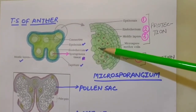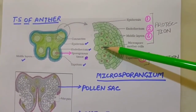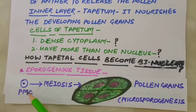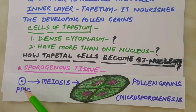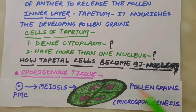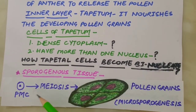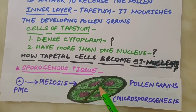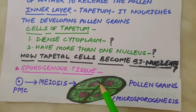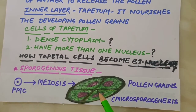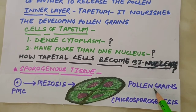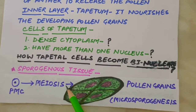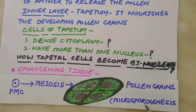In the center are cells called sporogenous tissue. Each cell of the sporogenous tissue is capable of giving rise to a microspore tetrad. Each pollen mother cell of the sporogenous tissue is capable of producing new pollen grains. These cells undergo meiotic divisions to form microspore tetrads. As the anther matures and dehydrates, the microspores dissociate from each other and develop into pollen grains. The process of formation of microspores from pollen mother cells through meiosis is called microsporogenesis.